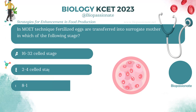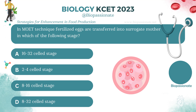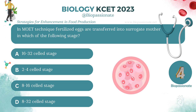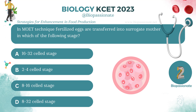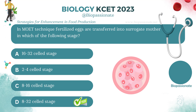In the MOET technique, fertilized eggs are transferred into a surrogate mother at which stage? Answer: 8 to 32 cell stage.